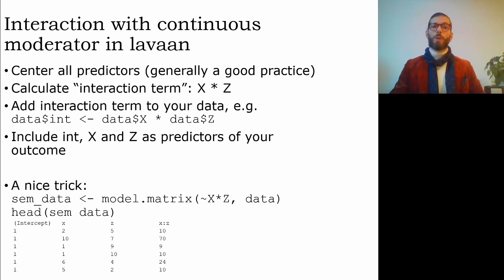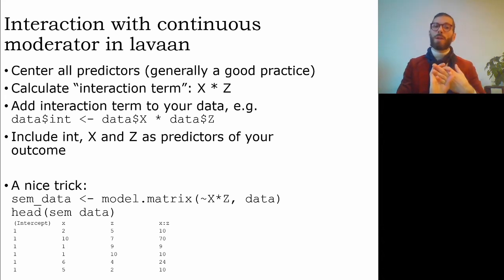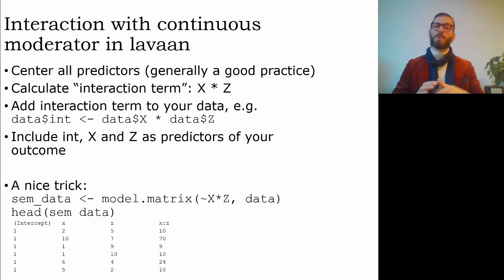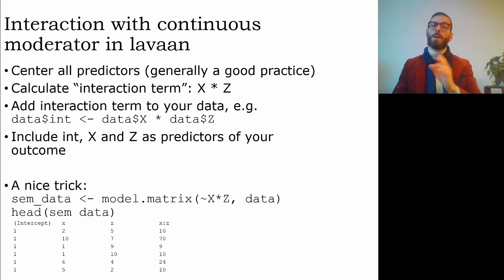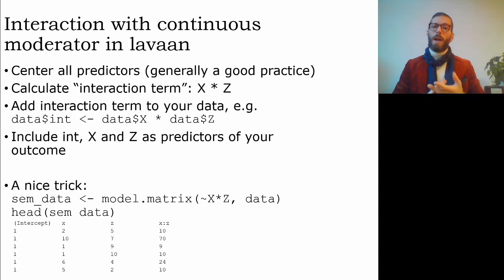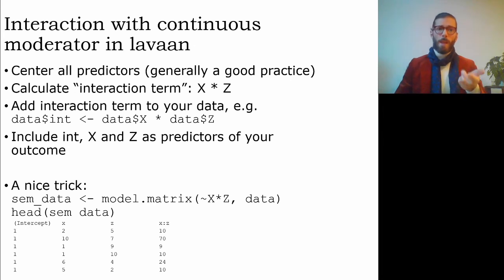To test this interaction term, we estimate a regression model with Z, X, and the interaction between X and Z as predictors of the outcome. A nice trick to avoid multiplying variables by hand is to use the function model.matrix, which can create all columns necessary to analyze a given regression model. For example, calling model.matrix with the formula predicted by X multiplied by Z on the data object.